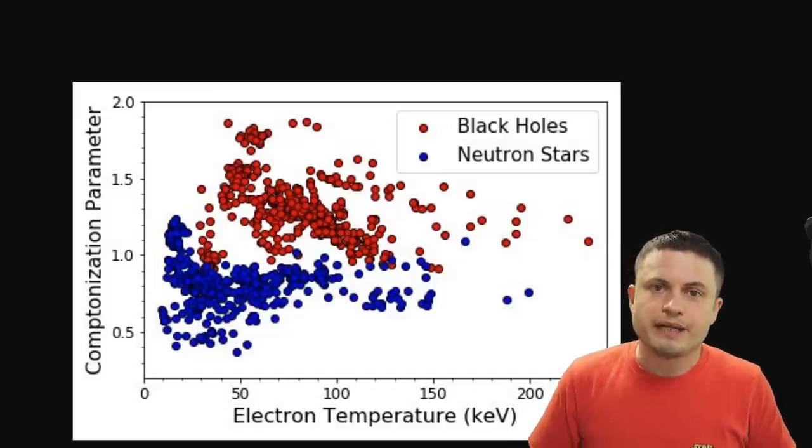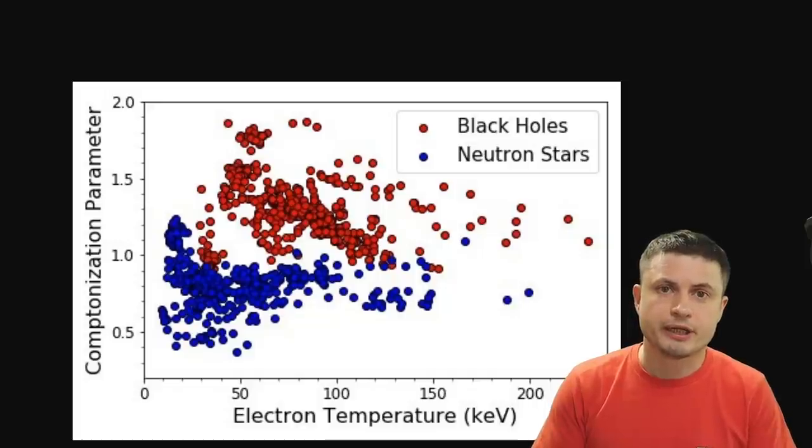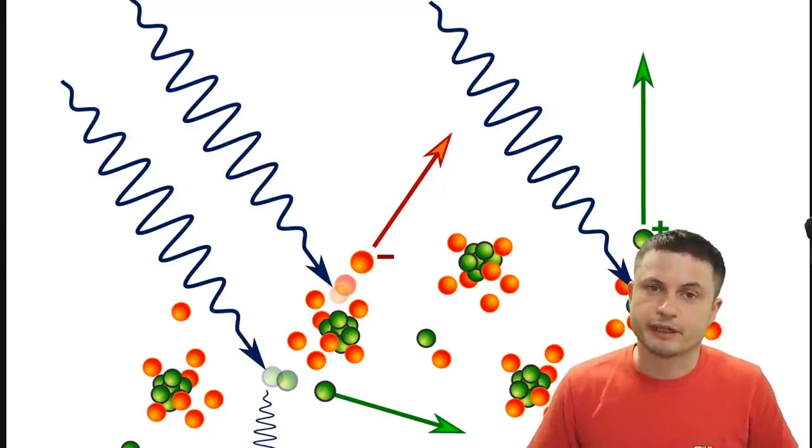And a lot of these observations are made in regards to what's known as the Compton scattering or Comptonization parameter. Now it's a relatively simple yet somewhat difficult concept to understand, so let's explore this for a few seconds.